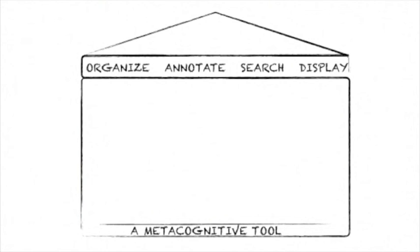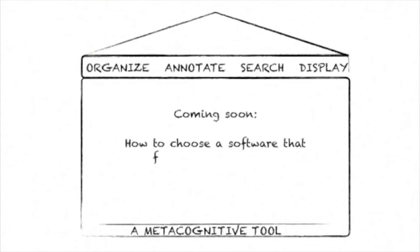This was a rough overview of the core things QDA software can help you with: organizing, annotating, searching through, and displaying data. In future videos, I will talk about some strategies for choosing software that fits your data, your method, and your preferences as an analyst.